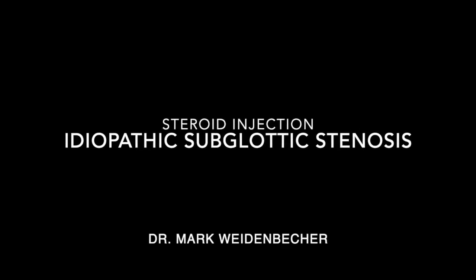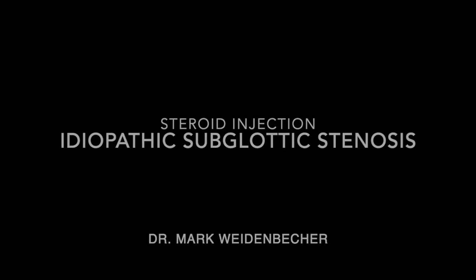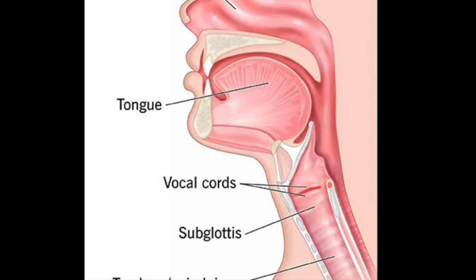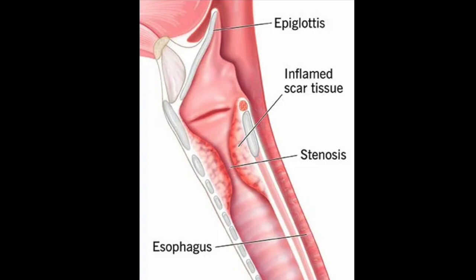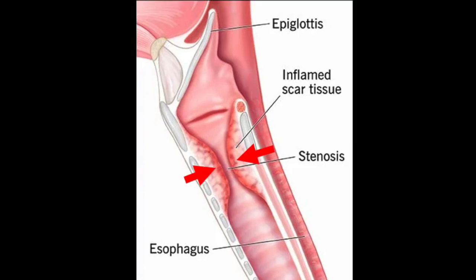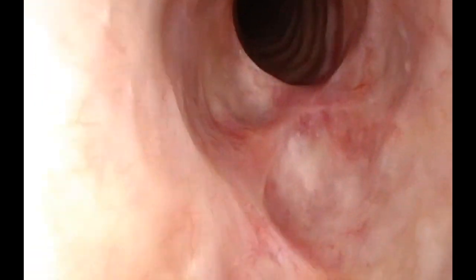Idiopathic subglottic stenosis describes a condition that is often times seen in women. Inflammation and ultimately scar tissue develops below the vocal cords, which can over time cause significant breathing difficulties. This scar tissue needs to be treated either in the operating room with laser or with balloon dilation, but in many cases this can also be done in the office via steroid injection.